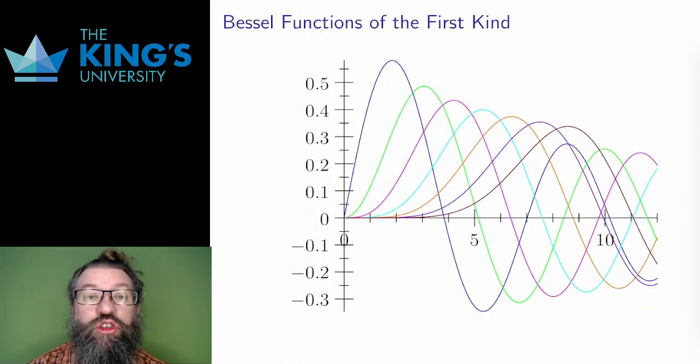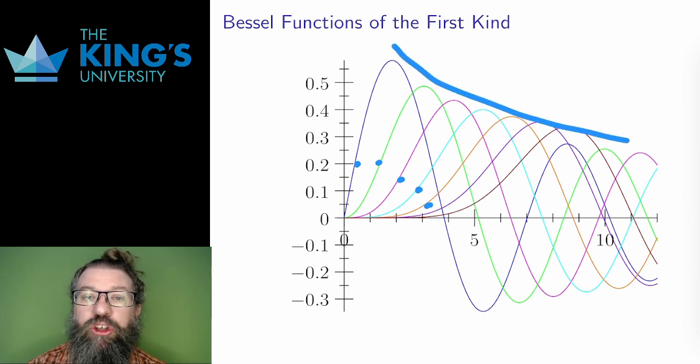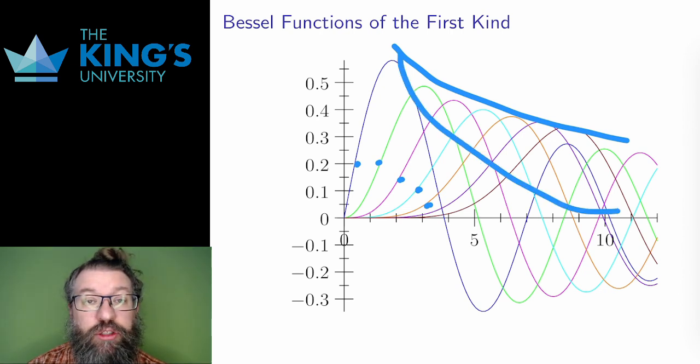For now, though, let me just show you these functions. These are the graphs of the first few positive integer Bessel functions, so nu equals 1, 2, 3, 4, and so on, of the first kind. These are damped oscillations, but they decay much more slowly than the exponential damping that we saw in the previous chapter. As damped oscillations, though, they do nicely measure harmonic systems, such as the amplitude radiating out from the center of a circle.